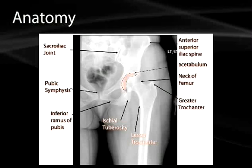Look for avulsion fractures along the ischial tuberosity area, especially in a younger population. The greater trochanter is a major attachment point, and if there's a fracture anywhere on the neck or an intertrochanteric fracture, it could be pulled away. Look for the lines of approximation. The lesser trochanter is where the iliopsoas muscle attaches — again, there can be avulsions here.